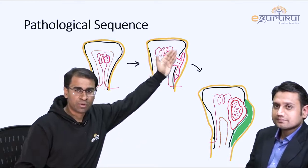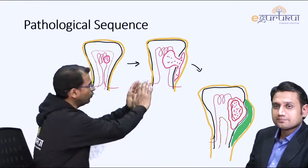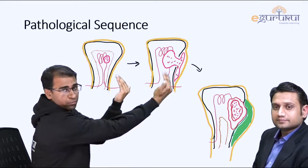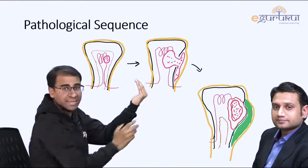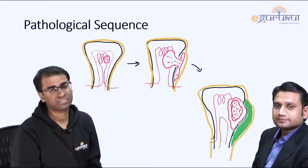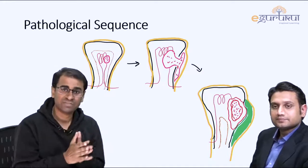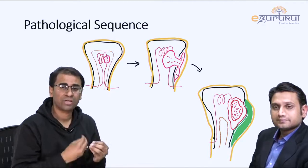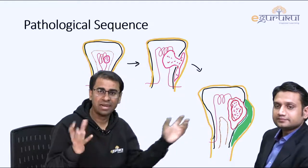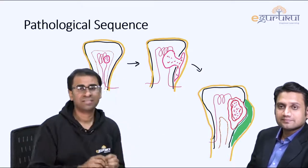As pus spreads, because the periosteum is loosely attached, it lifts the periosteum outward. The bone around this area loses blood supply, leading to ischemic necrosis — the dead bone produced is called a sequestrum. After necrosis, the repair process begins with granulation tissue formation and new osteoblast activity. This newly formed bone surrounding the infected area — shown in green in the diagram — is called the involucrum.